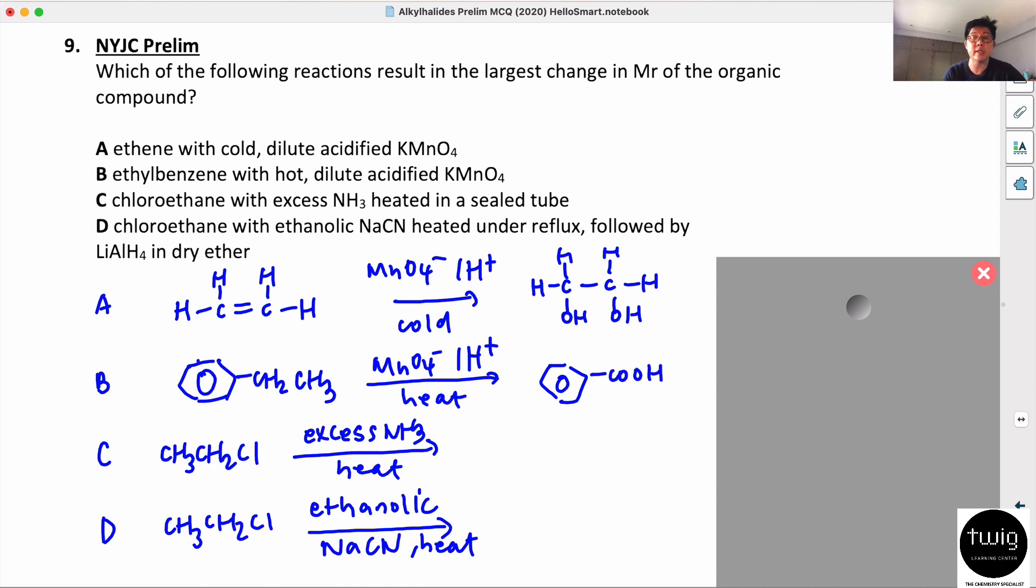Third one is nucleophilic substitution. The ammonia is the nucleophile. It will replace the Cl with NH2.